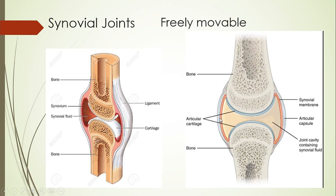Synovial fluid has several functions. Much like articular cartilage reduces friction, synovial fluid acts as a lubricant and helps reduce that bone-on-bone rubbing that occurs. It also does some shock absorption — being liquid, it allows us to absorb some of the shock from movement. At the same time, it also nourishes the cartilage, because cartilage doesn't have much blood flow going to it. So the synovial fluid keeps the cartilage nourished and alive.